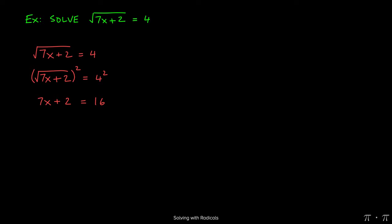At this stage, we should have a very nice, easy linear equation that we can solve by subtracting the 2 over to the right-hand side. 16 minus 2 is going to give us 14.